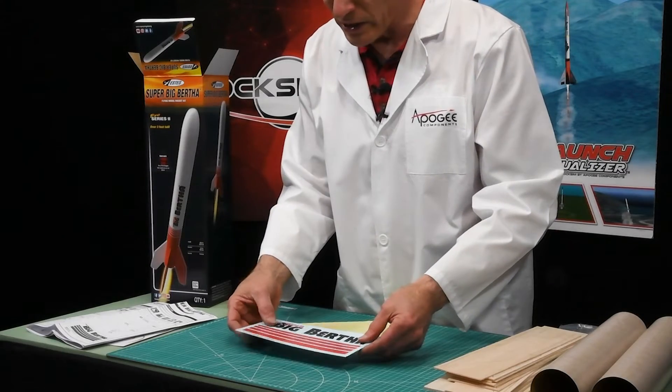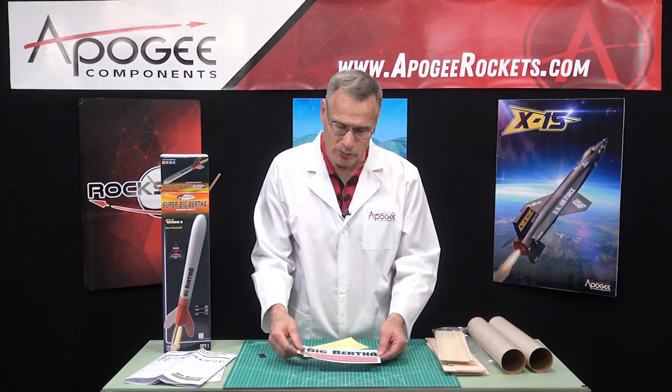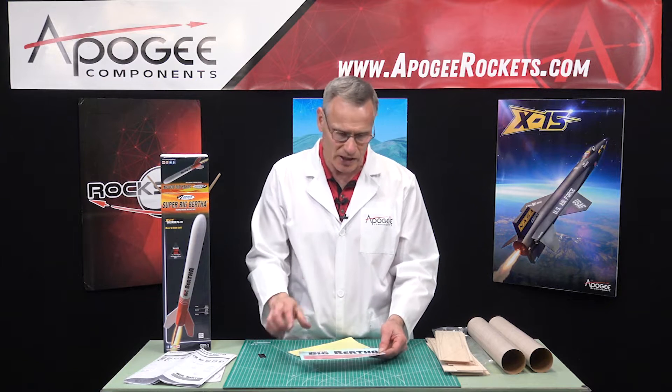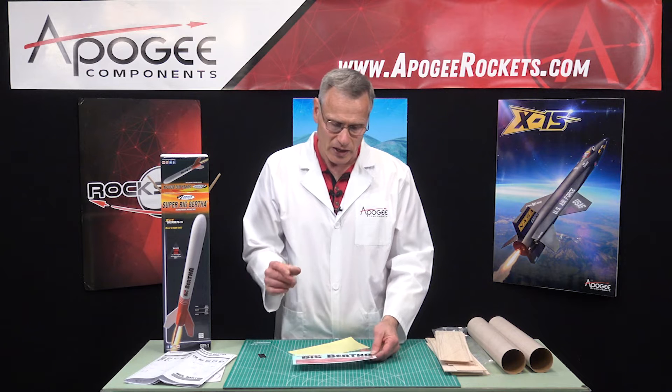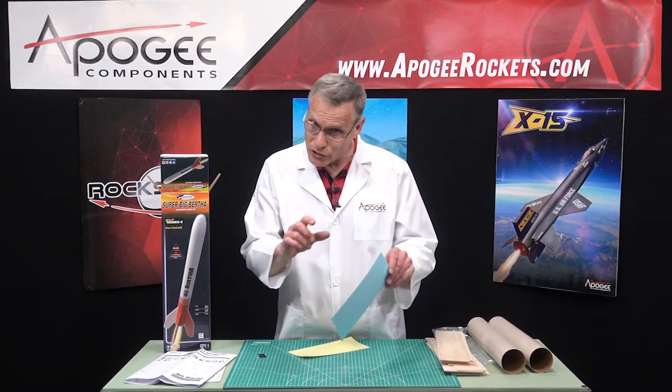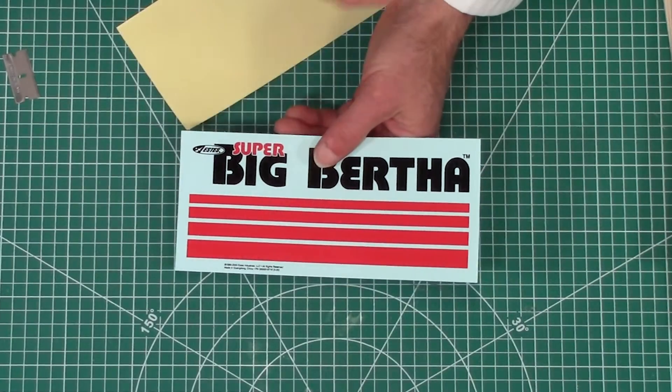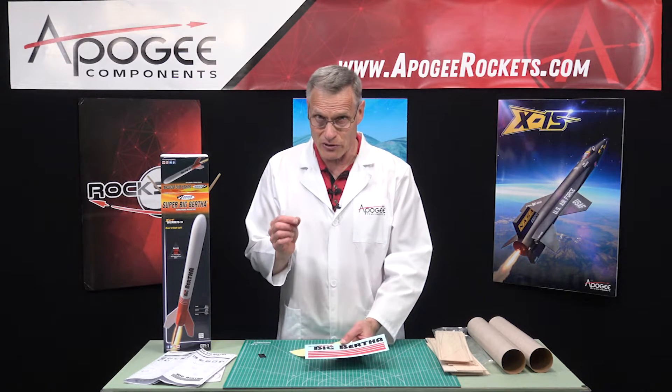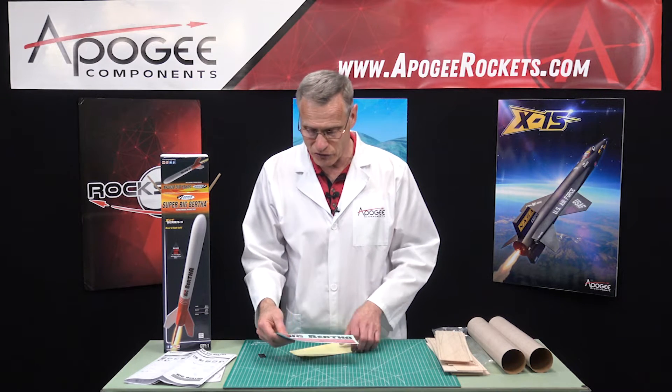And then here we have a water slide decal. So you'll cut these out, the patterns, and then soak them in water, and then they float off, and it's a really thin acetate, and then you just slide it right onto your rocket. The nice thing about them is that they're very thin, so you don't get a shadow when you're looking at it in the bright sunlight. That edge just almost blends in perfect.